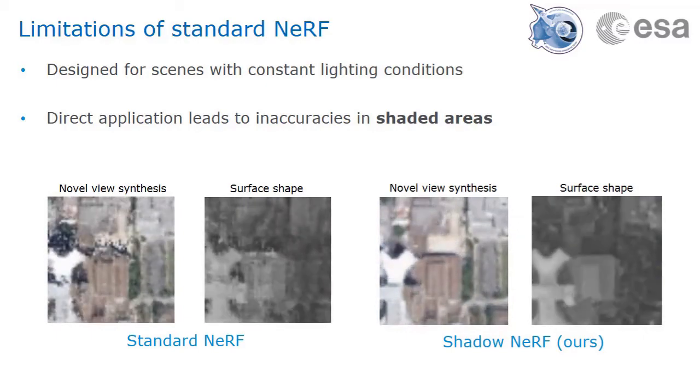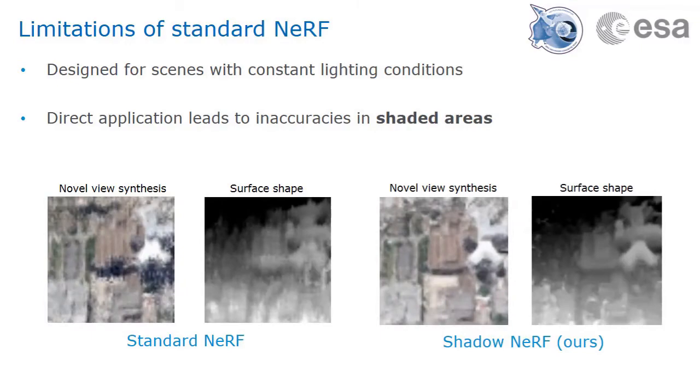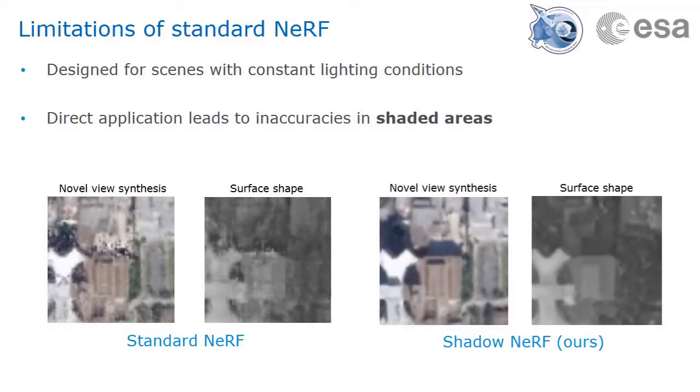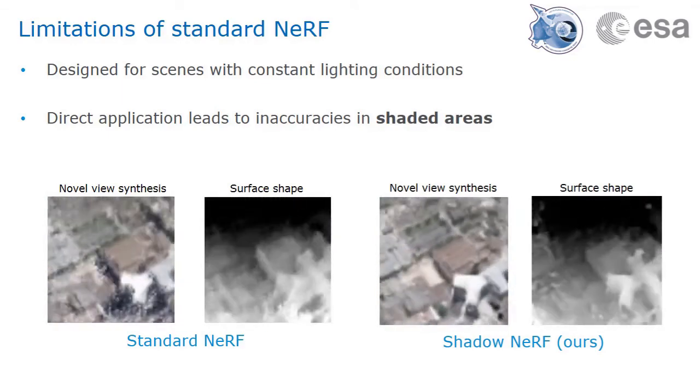On the right, we can see that with the same data, the shadow NeRF model is able to provide a more accurate synthesis of the shadows, including when interpolating between different solar positions. Overall, the quality of the shape estimation is also improved.